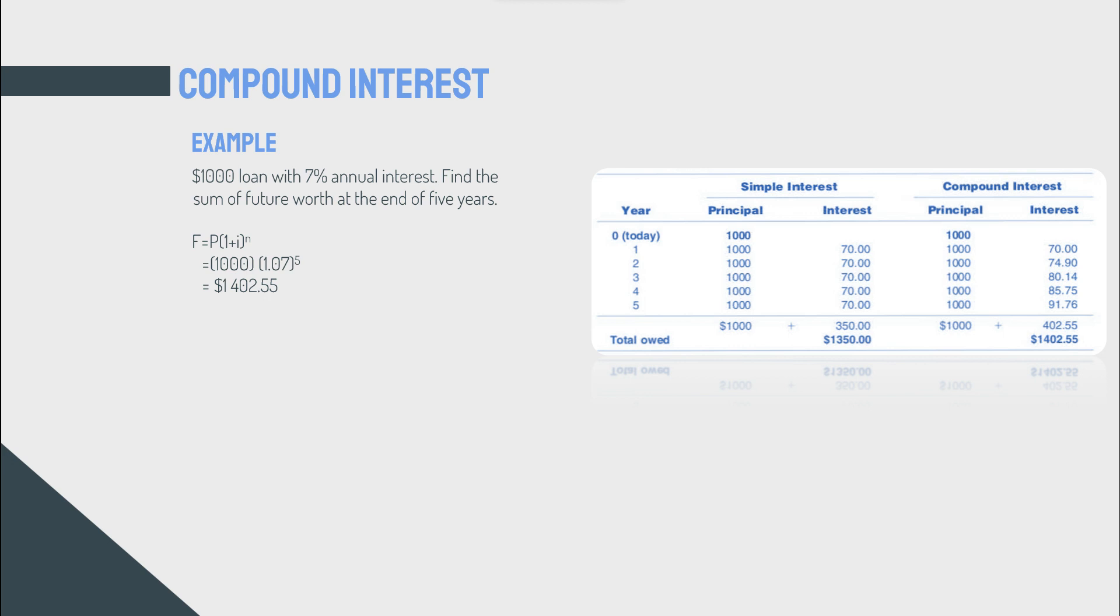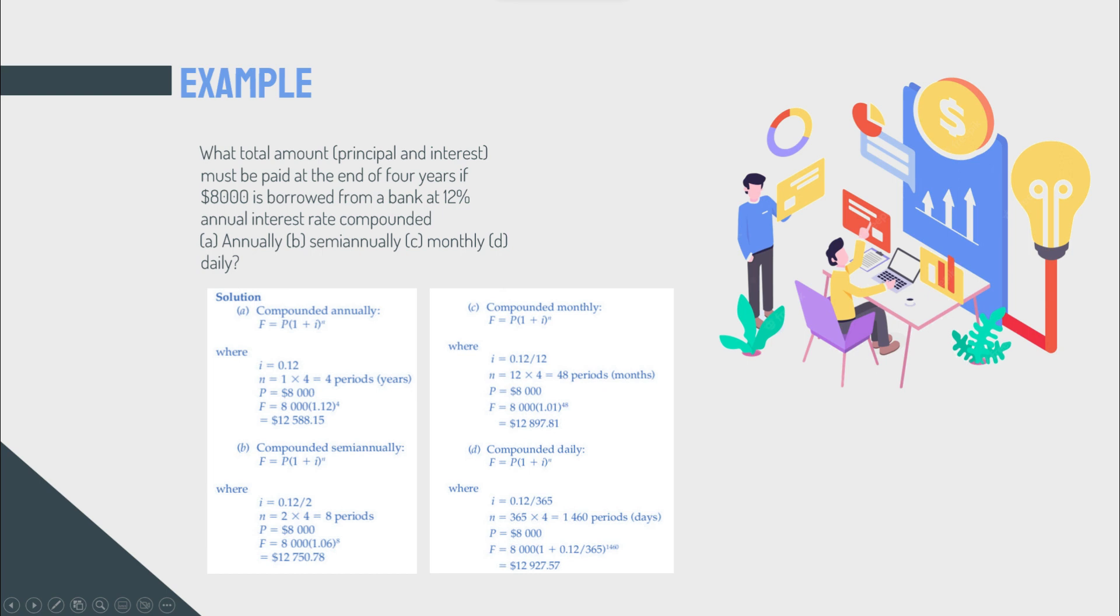So compound interest is a heaven of money for you if you're a lender, and it's a hell for you if you are the borrower. That's the way I see it. Okay, another example. What is the total amount, principal and interest, must be paid at the end of four years if $8,000 is borrowed from a bank at 12% annual interest rate compounded annually, semi-annually, monthly, and daily? I'm going to do the annually and you guys continue. Maybe I'll do the last one as well.